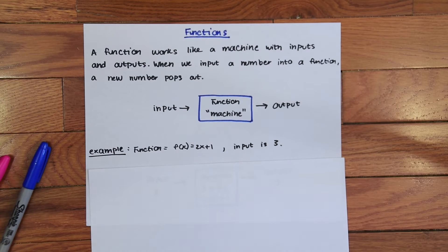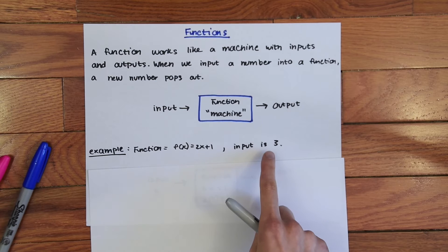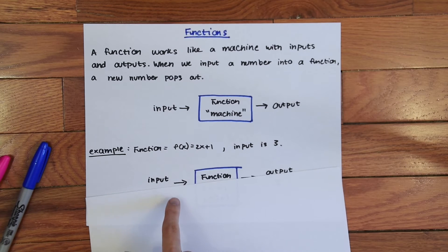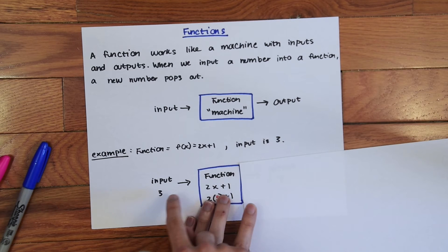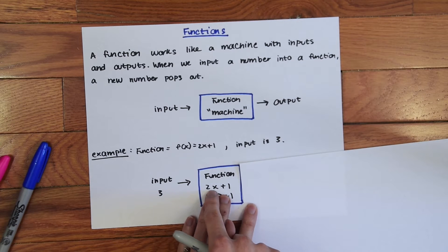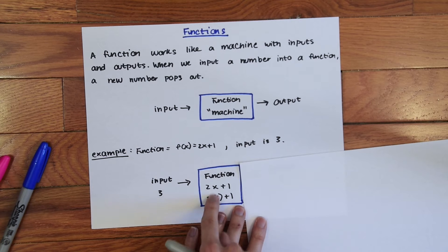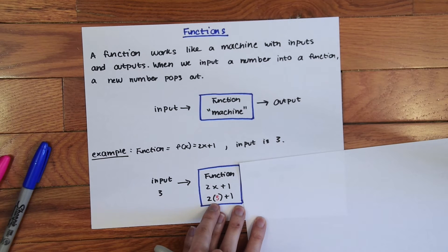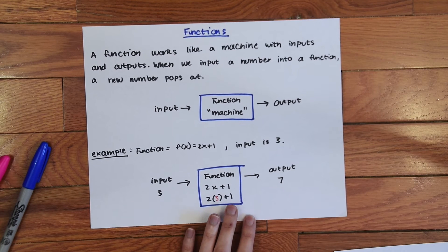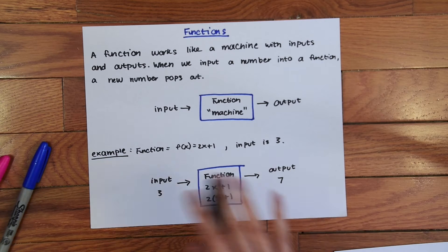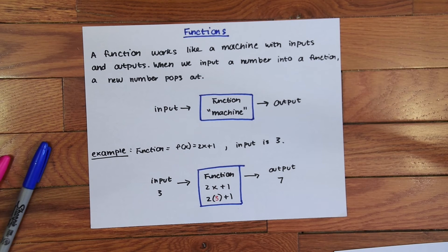So if we have the function f of x equals 2x plus 1 and we have an input of 3, we're going to put a 3 into our function machine. So we have input a 3 into our function 2x plus 1. So all that means is we're plugging in 3 into the value for x and then solving. So we get 2 times 3 which is 6 plus 1 which gives us the output of 7. So that's all this machine stuff talk is.